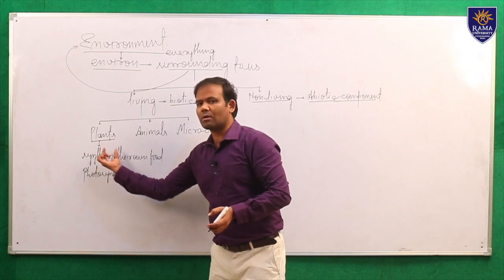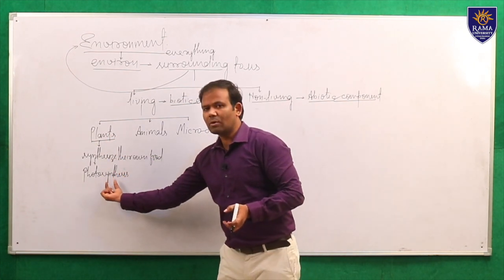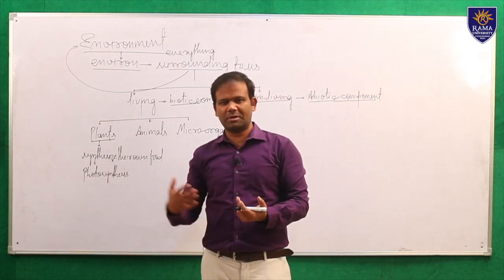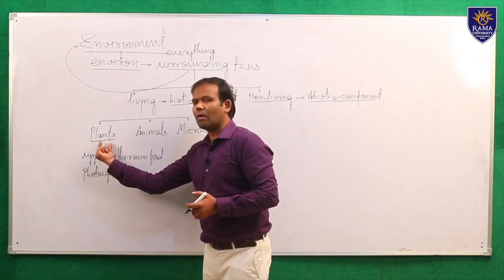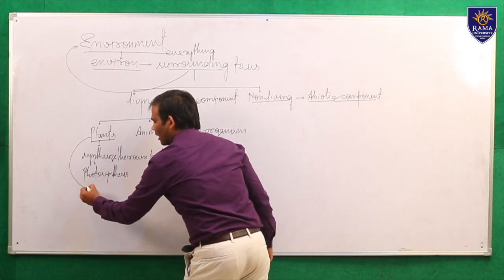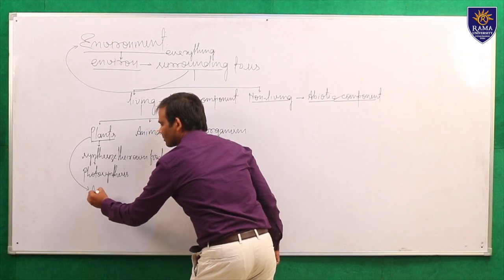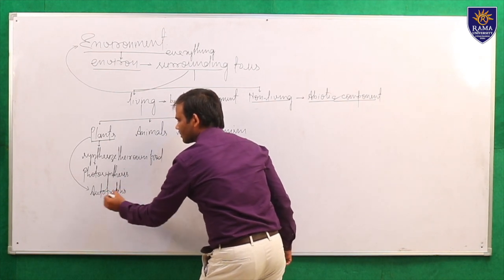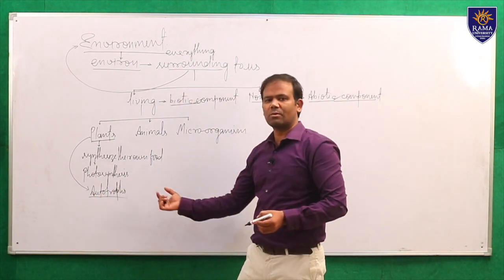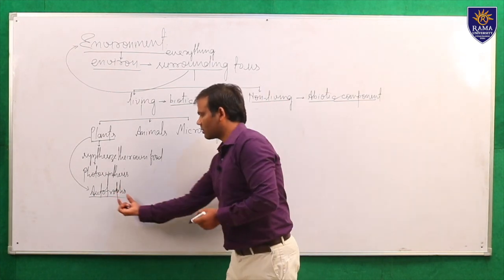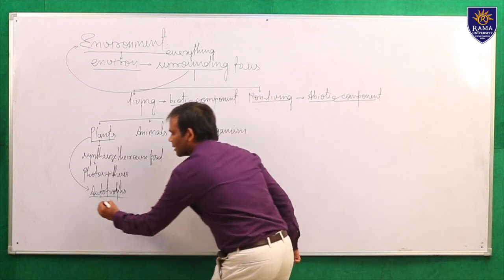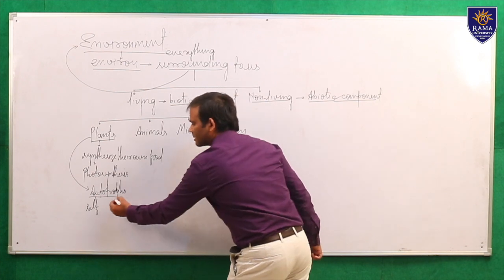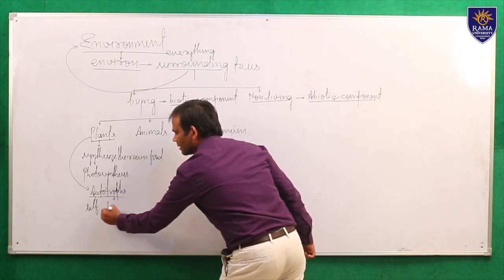Now let us focus on plants. These plants present in our surrounding synthesize their own food via a process known as photosynthesis. The plants make their own food with the help of photosynthesis using CO2, soil water, in the presence of sunlight. That is why the plants are known as autotrophs. The term autotroph is made up of two words — 'auto' means self, and 'trophos' is originated from a Greek word meaning food.